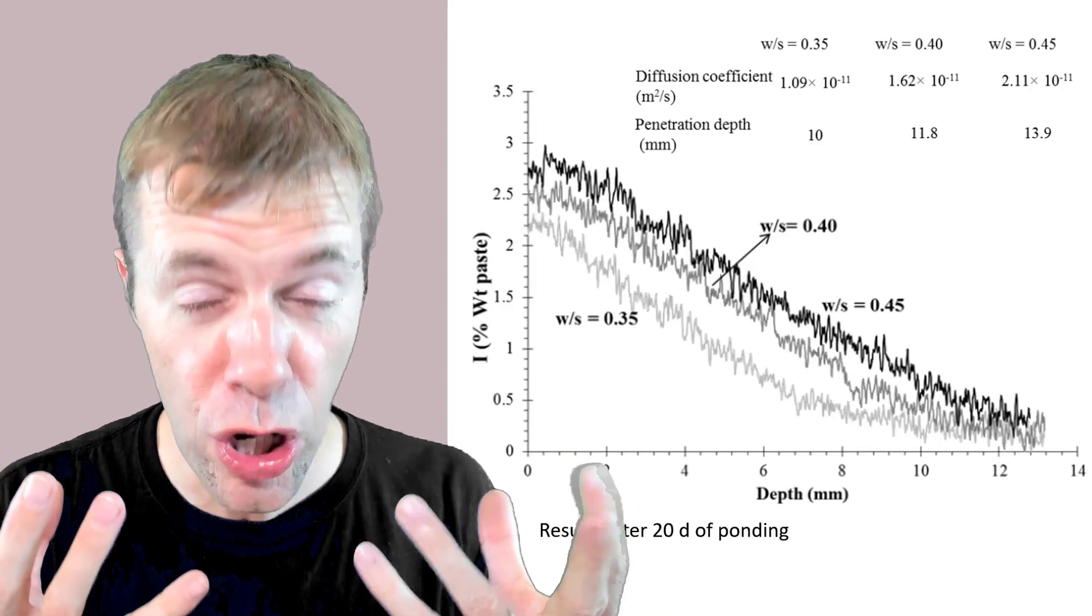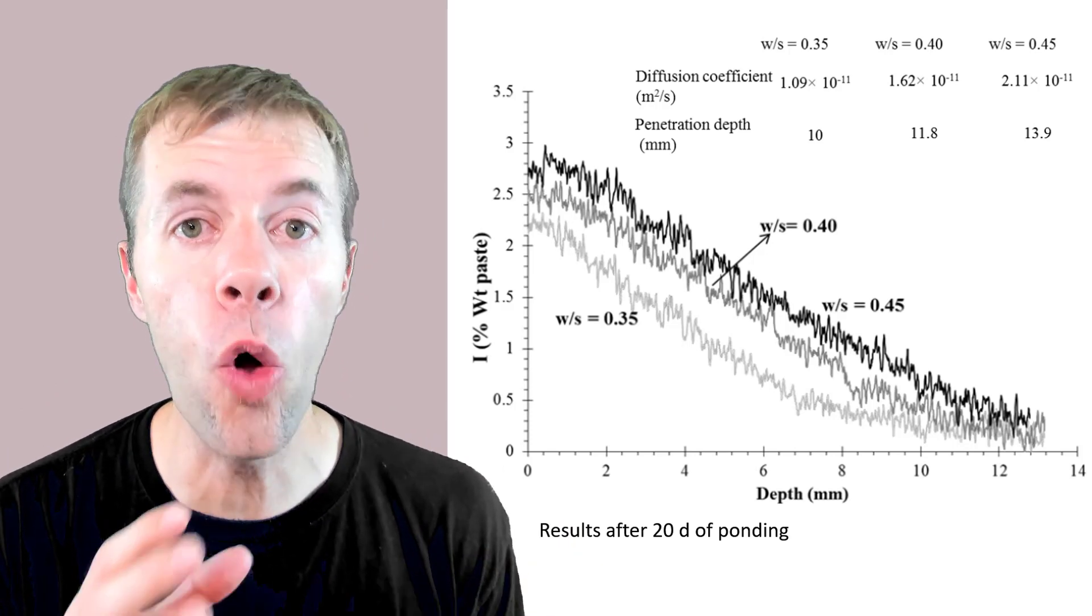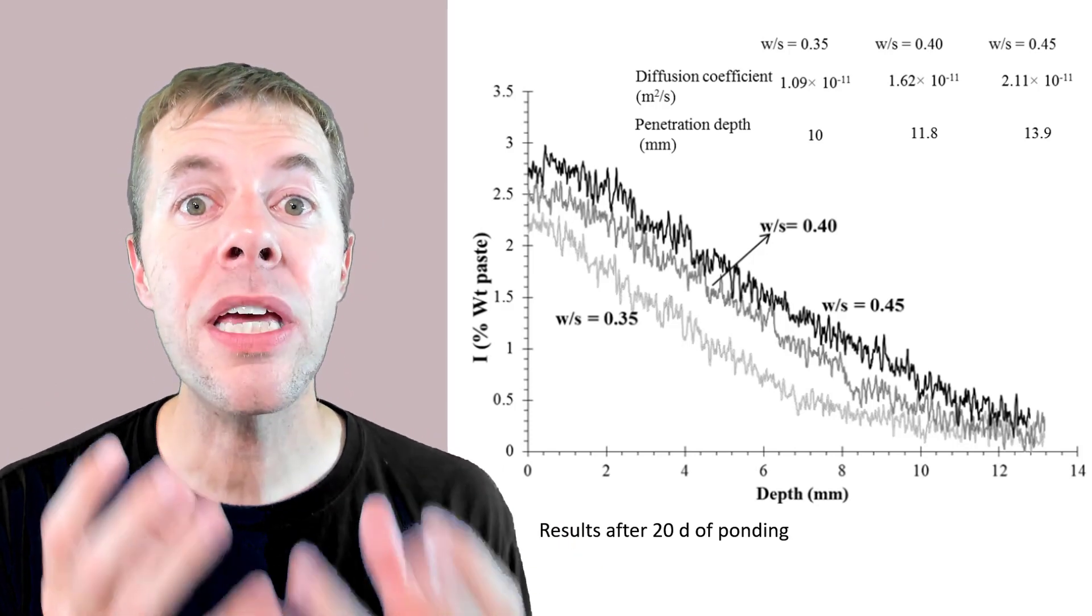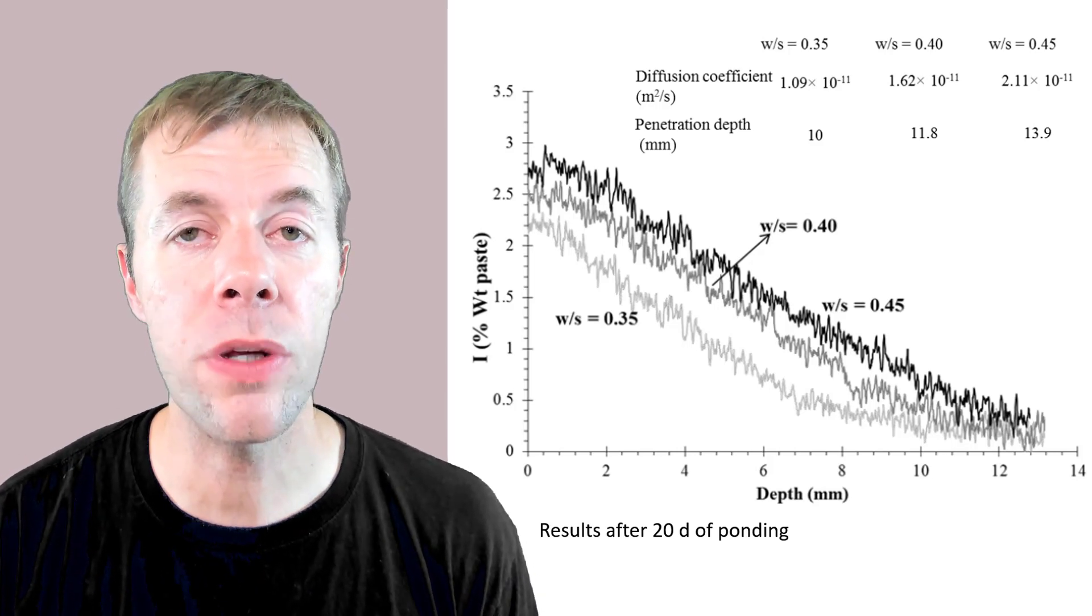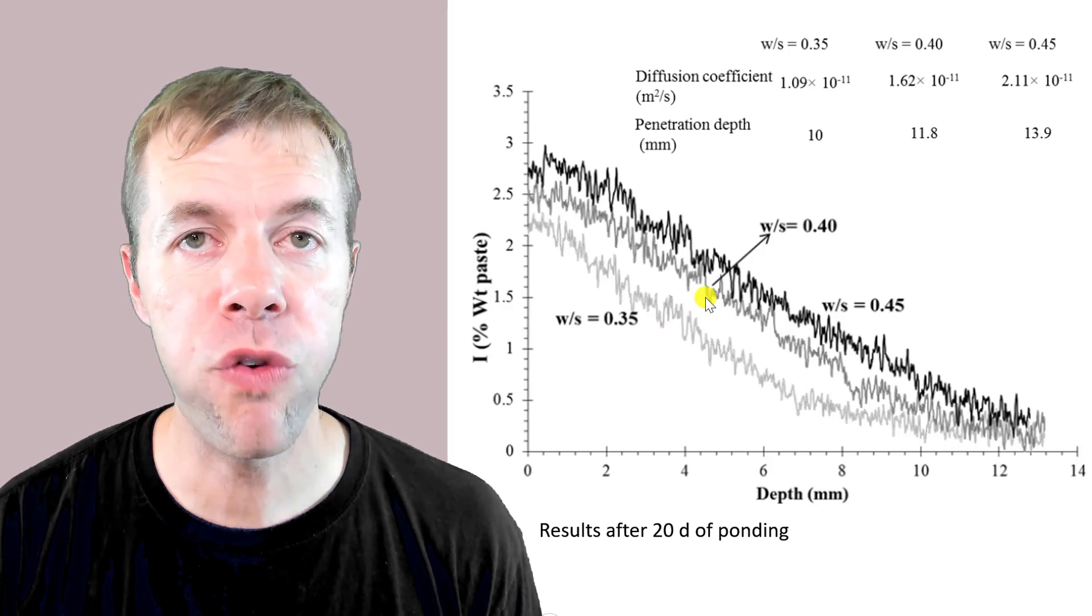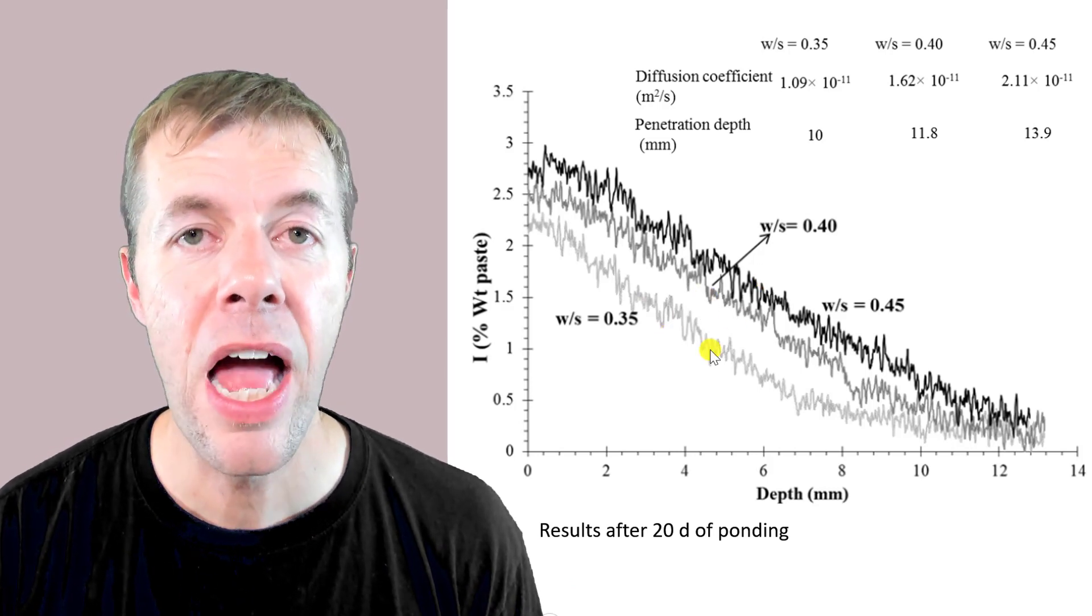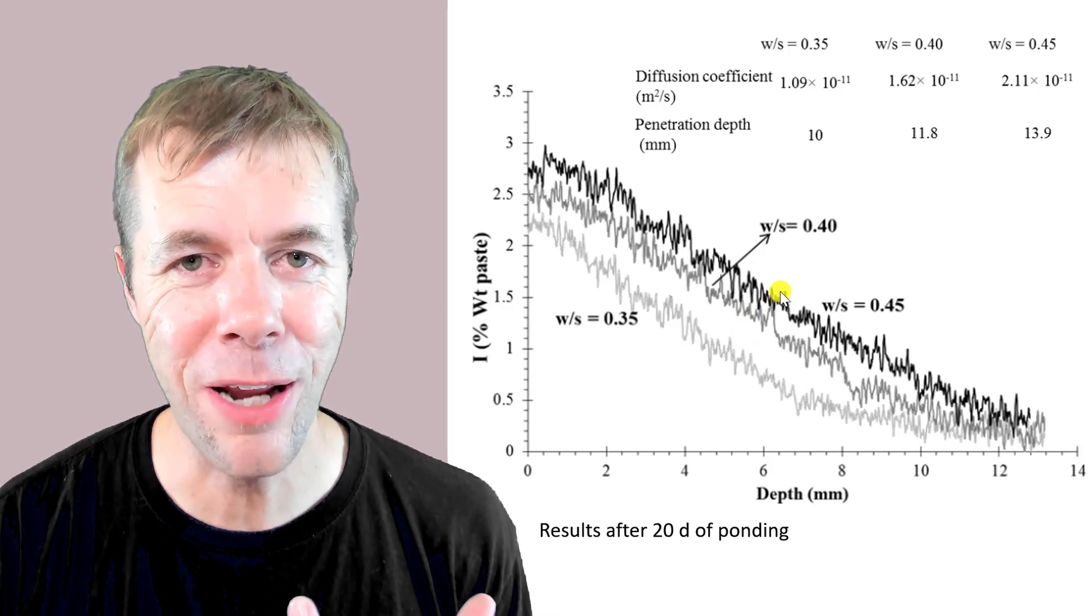Now, is there just pictures? We can actually get graphs. We can actually use standards where we know the amounts of iodide in them. We can get a concentration over the depth. And again, these are showing these three different water to cement ratios: 0.35, 0.40, and 0.45. And we can show the different rates of penetration. Pretty wild, right?